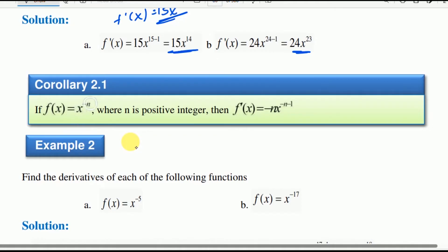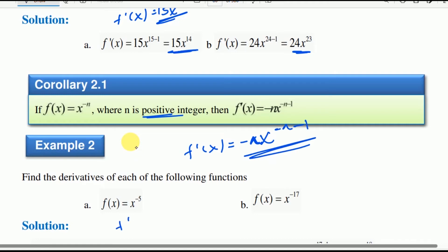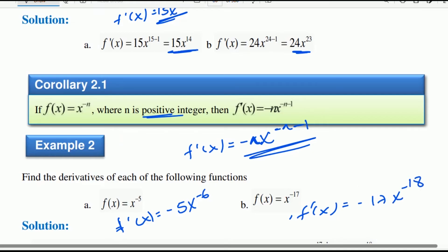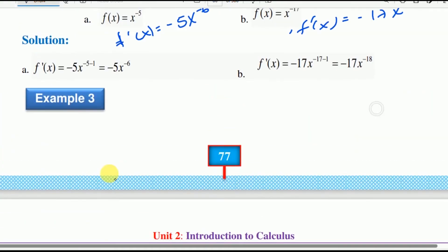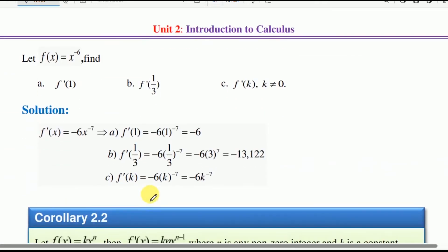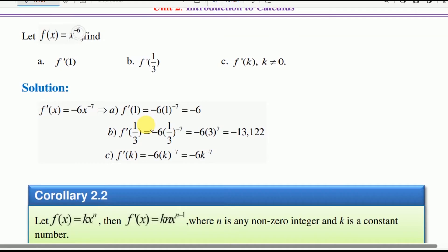If f of x equals x to the power of negative n, where n is a positive integer, we use the same rule. For example, f of x equals x to the power of negative 1. The derivative at zero gives negative one. For f of x equals x to the power of negative 7, the derivative is negative 7 times x to the power of negative 8, but negative 17 minus negative 1 gives negative 6 times x to the power of negative 6.